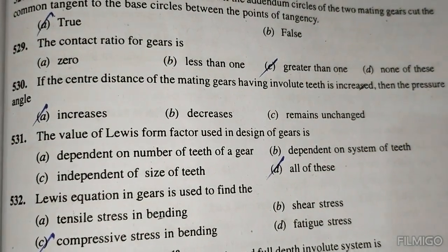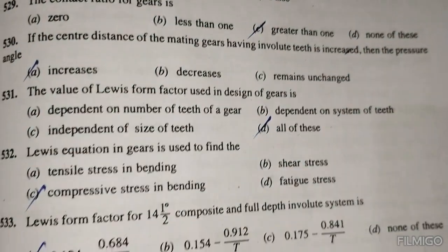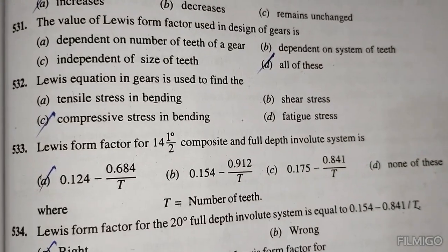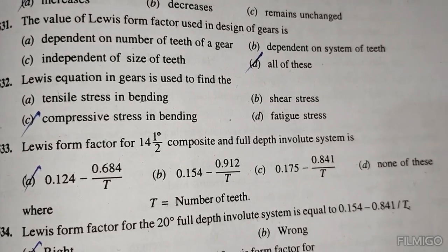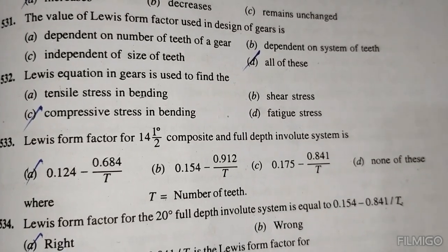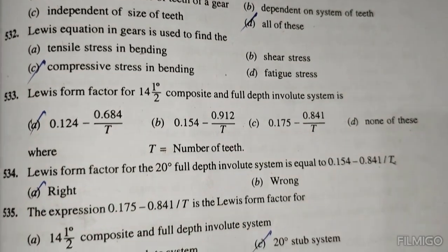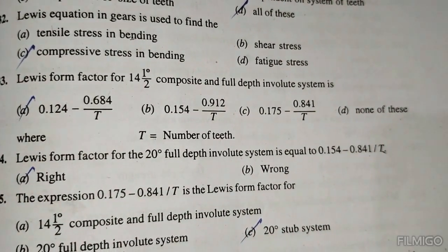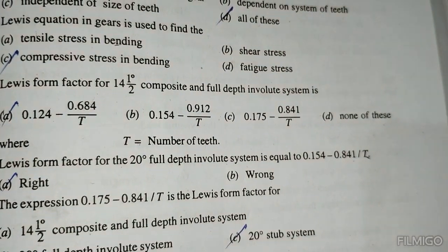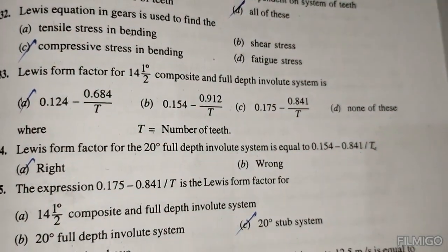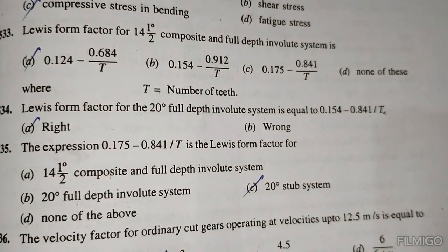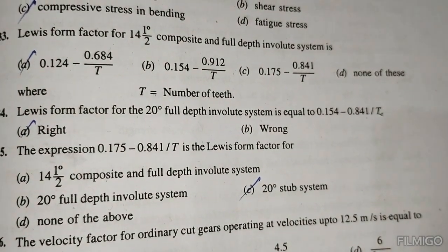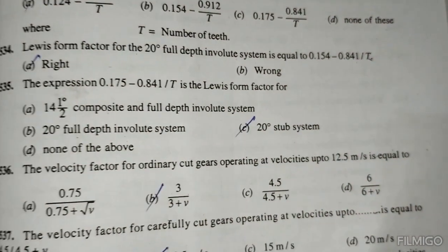The Lewis form factor used in gear design depends on all of the above factors. The Lewis equation for gears is used to find the bending stress. The Lewis form factor for 14.5-degree composite and full depth involute system is 0.124 minus 0.684/T. For the 20-degree full depth involute gear system it is 0.154 minus 0.841/T. The expression 0.175 minus 0.841/T is the Lewis form factor for the 20-degree stub system.